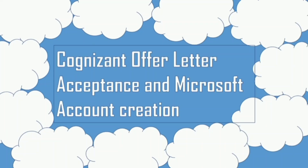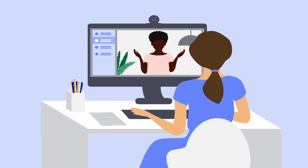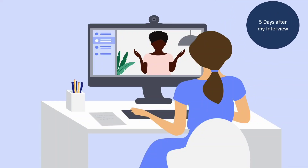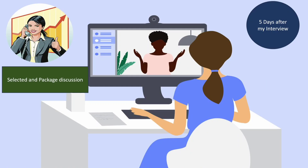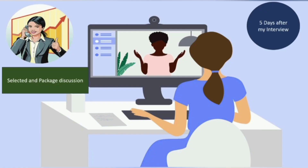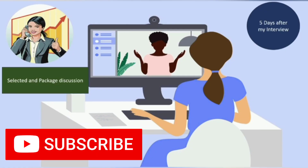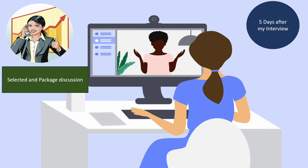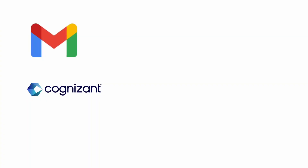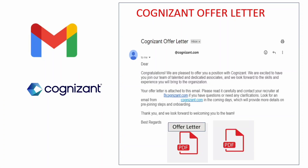Right after five days of my interview I received a call from my recruiter. She told me I got selected and we had some package discussions — she gave me a number, I negotiated a bit, and there was also a discussion regarding job location. After that, within a few days I received an offer letter from Cognizant via email.